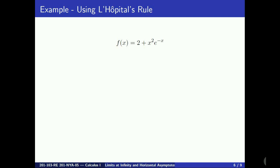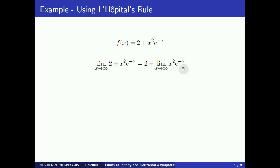In our second example, we will need L'Hôpital's rule. The function is 2 plus x squared e to the minus x. To study what happens when x is large, we evaluate the limit as x goes to infinity of the function. The first term, 2, is constant and its limit is just 2. So the limit is 2 plus the limit of x squared times e to the minus x. Since when the exponent is large and negative e to the minus x goes to 0, but x squared goes to infinity, we have an indeterminate product.